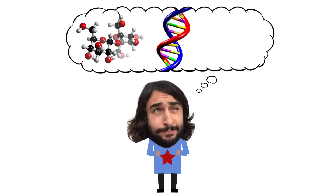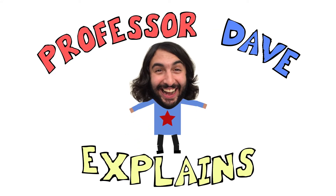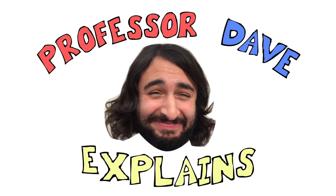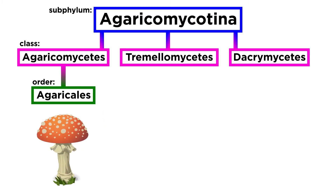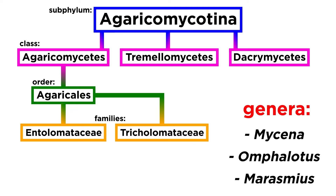Professor Dave Explains. In this fourth tutorial on Agaricales, we will discuss still more families in this order. Specifically, we will be discussing Entolomataceae and Tricholomataceae, and the genera including Mycena, Omphalotus, and Marasmius.